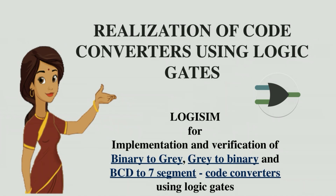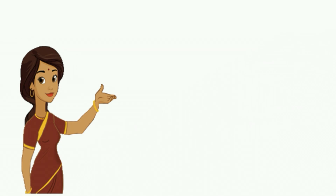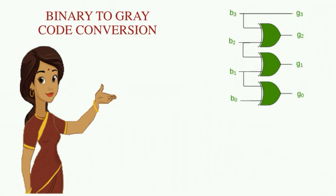We will implement binary to gray, gray to binary, and BCD to seven segment code converters using logic gates. There are numerous codes like binary, octal, hexadecimal, binary coded decimal, XS3, gray code, error correction code, ASCII code and so on, which are commonly used in computers, digital electronics and microprocessors.